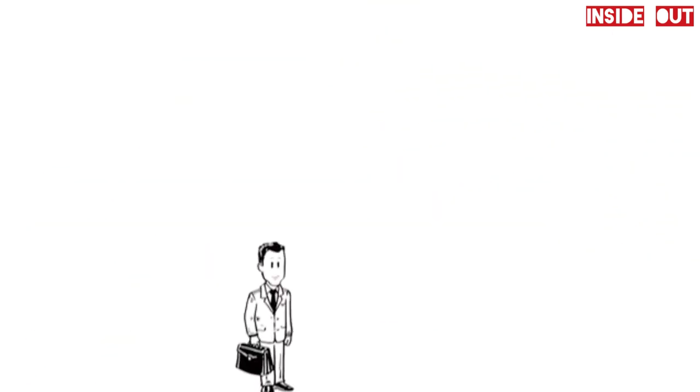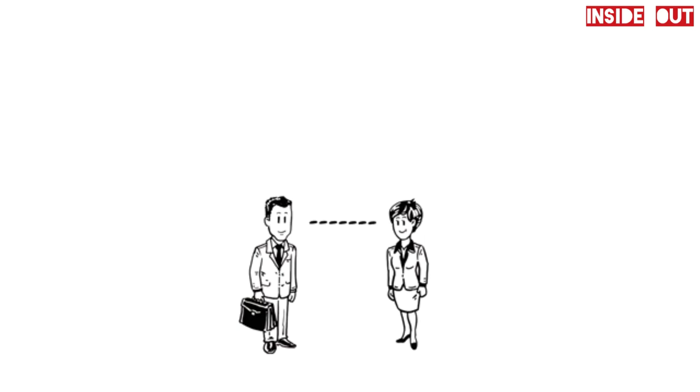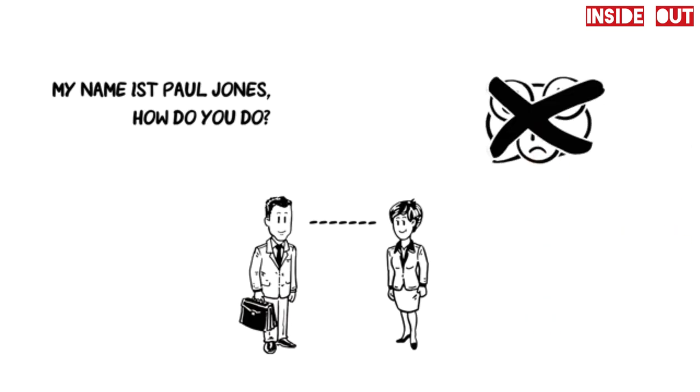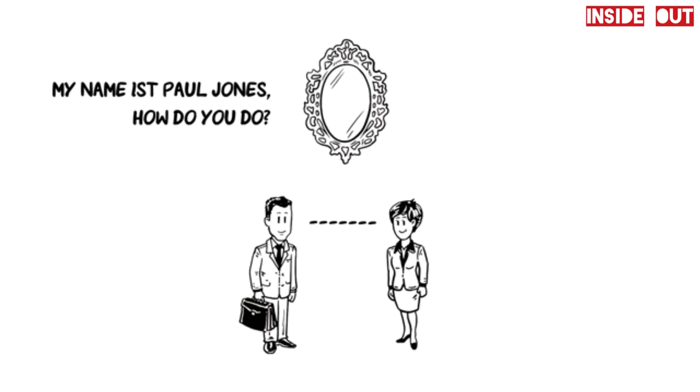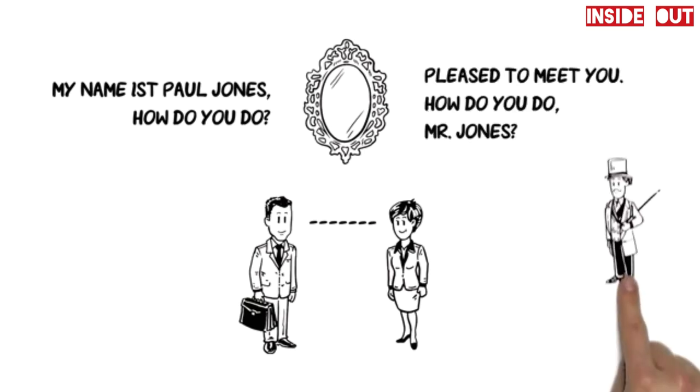When meeting your interviewer, you should make eye contact. When your interviewer says, my name is Paul Jones, how do you do, don't talk about your actual feelings. Rather, mirror what the interviewer has said. Pleased to meet you. How do you do, Mr. Jones? This sounds polite.